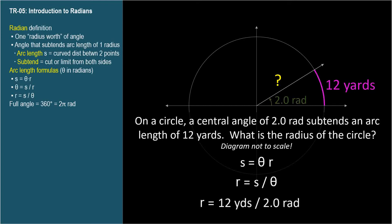Plug in our values and we get a radius of 6 yards. I said earlier that you could think of a radian as a radius worth of angle. In this not-to-scale picture, you can see that two radians subtends an arc length of two radii. The number of radians in the angle equals the number of radii in the arc length. Also note from the last line that since radians is unitless, yards divided by radians equals yards. There are more sample problems like this in video TR-05x.